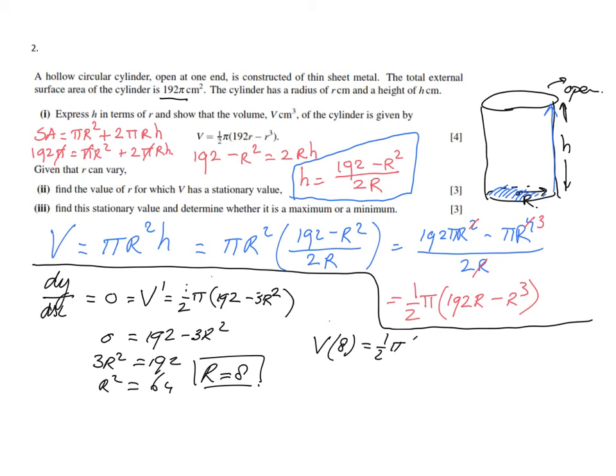Let's do that part first. V(8) is going to be ½π times (192 × 8 - 8³). If you plug all of that in your calculator and make sure to do that properly, you're going to get 1608.495439, which to three significant figures is 1610 cm³. That is the stationary value when the radius is 8.